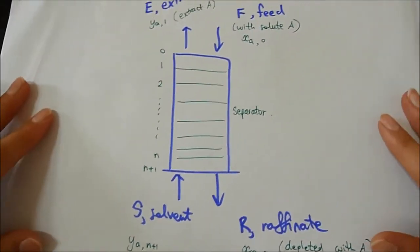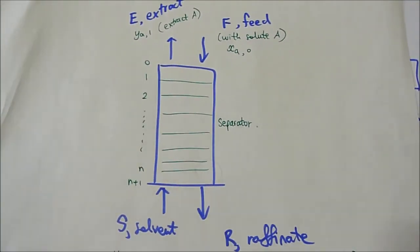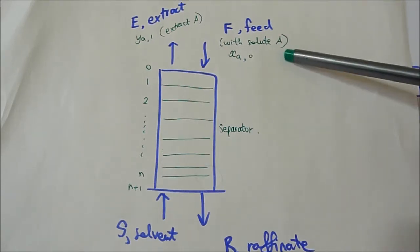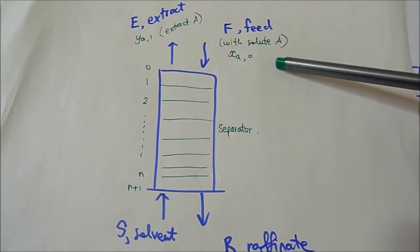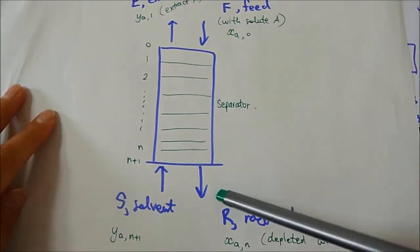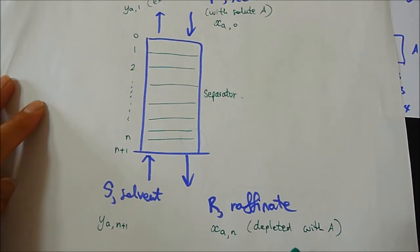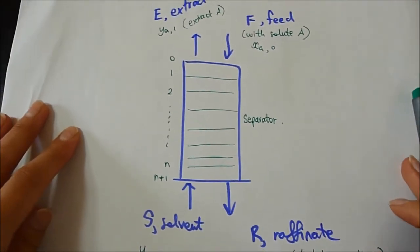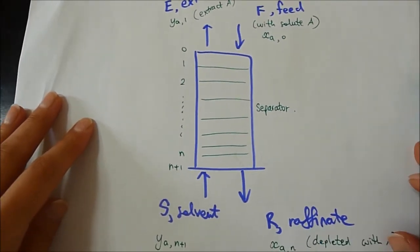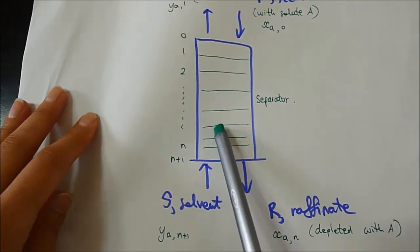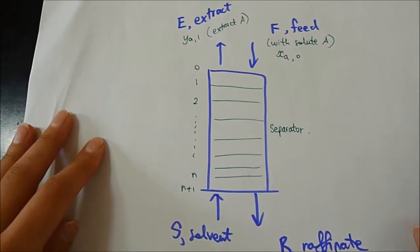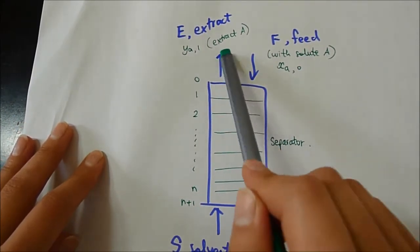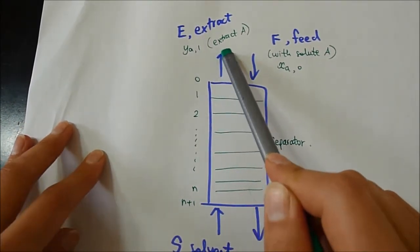This is the diagram for the liquid-liquid extraction separator. The two liquids flow counter-currently. Feed comes in with the needed solute to extract and goes down as raffinate without component A. Component A is the solute. Solvent enters from the bottom of the column, extracts component A, and exits from the top of the column as extract.